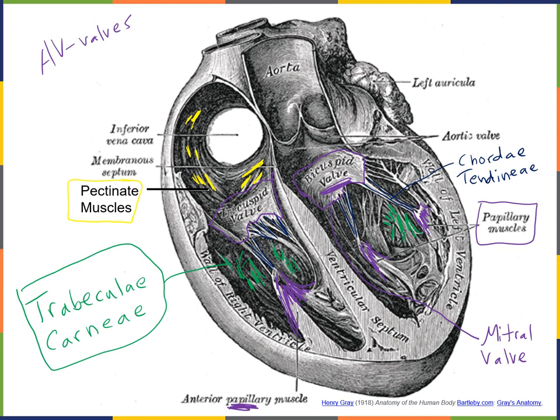When the ventricles contract, the pressure of blood inside the ventricles forces the AV valves closed and blood is forced out of the ventricles into the arteries.